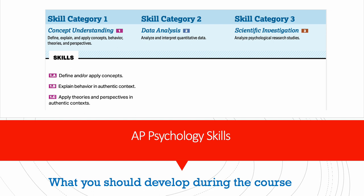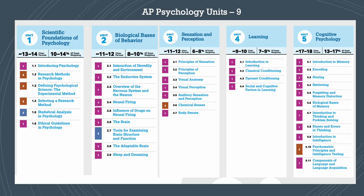The second skill category, which we learn mainly in Unit 1, is Data Analysis, where we analyze and interpret quantitative data. The third skill category is Scientific Investigation, spread throughout the nine units, where we analyze psychological research studies. The skills are color coded — most throughout the units are in pink, which is the first skill, as we have so many terminologies to define and apply in authentic contexts. This is a skill we will definitely use a lot as we solve free response questions.